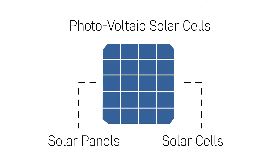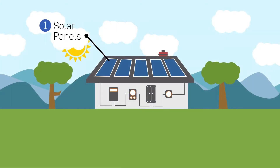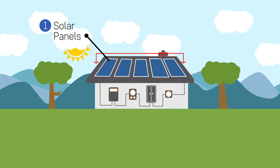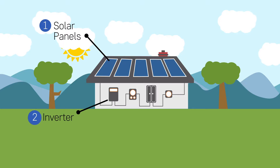Those solar cells comprised together generate enough electricity that it trickles into a conduit that runs underneath every single one of those panels, connects them all, and gathers the electricity across all the panels on your roof. It takes them down the side of the house where it then goes into number two, which is a box on the side of the home called an inverter.